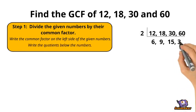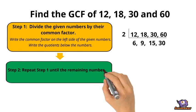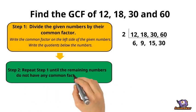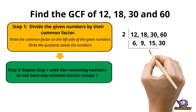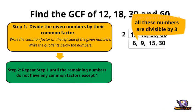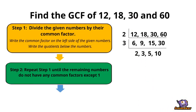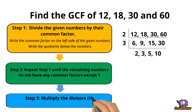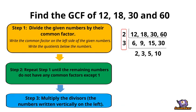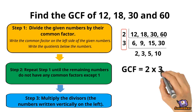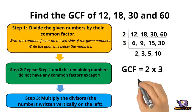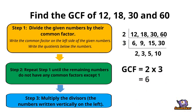Step 2: Repeat Step 1 until the remaining numbers do not have any common factors except 1. Step 3: Multiply the divisors — the numbers written vertically on the left. The GCF of 12, 18, 30, and 60 is 6.